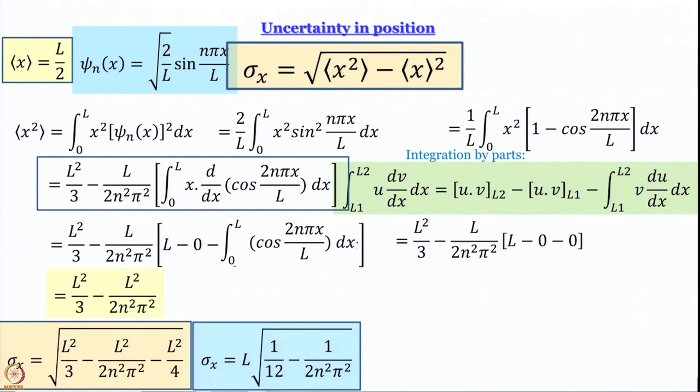The final answer we get is L multiplied by the square root of 1/12 minus 1/(2N squared pi squared). I strongly recommend that everyone taking this course work this out by themselves, because it is impossible to be fully convinced just by listening and watching — especially as we are not writing on a board. We are using an electronic medium, so please work out this expression yourself.